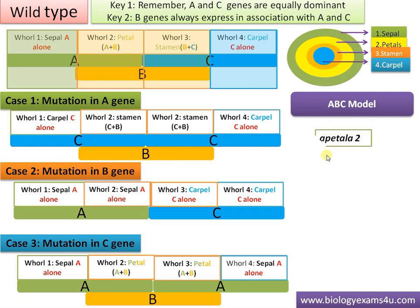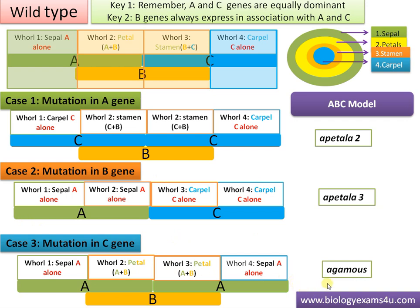In Arabidopsis thaliana, mutation in the A gene is called apetala 2, where the petal is absent. Mutation in the B gene is called apetala 3, where petal is also absent. Mutation in the C gene is called agamous, where both the male and female reproductive parts — the stamen and carpel — are missing. This is a summary of the ABC model of flowering.